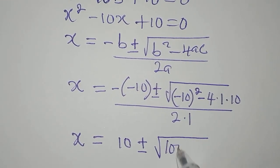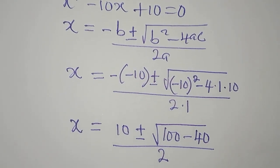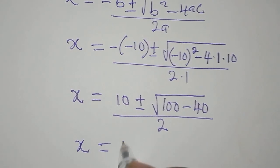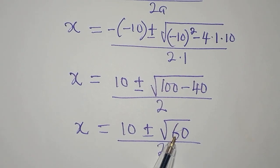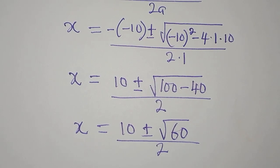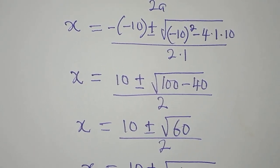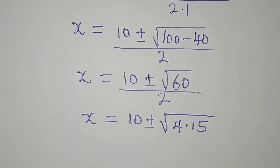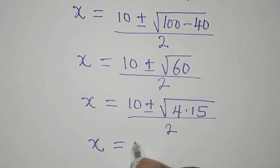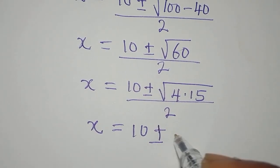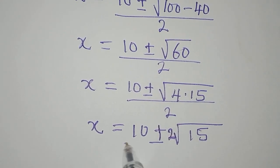We have 100 - 40 = 60, so x = (10 ± √60) / 2. We don't want decimals, so let's break down √60: √60 = √(4 × 15) = √4 · √15 = 2√15. So x = (10 ± 2√15) / 2.